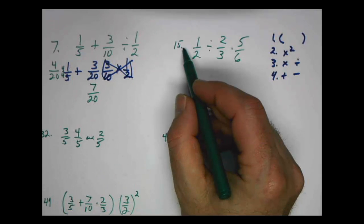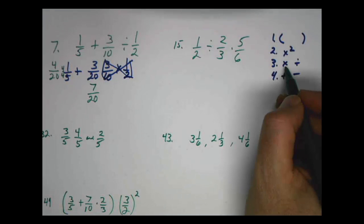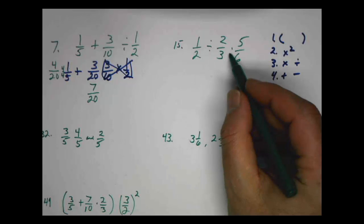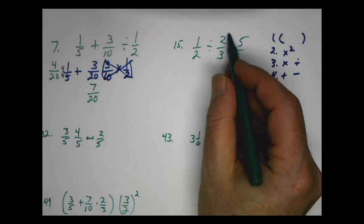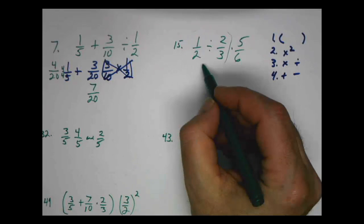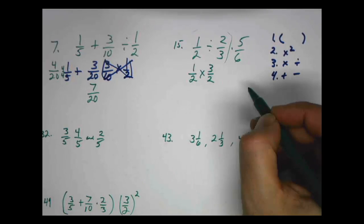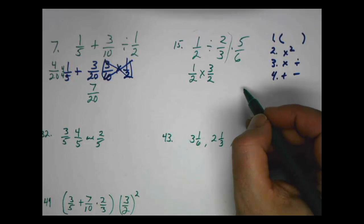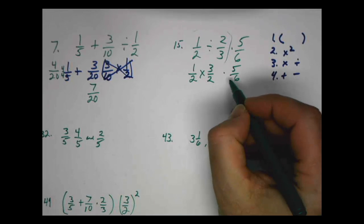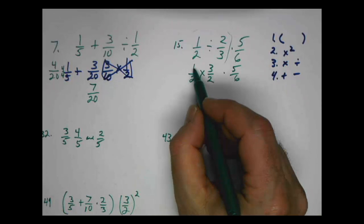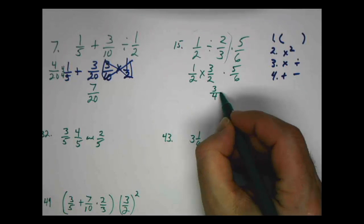Problem number fifteen. I don't have any parentheses, I don't have any exponents. I do have multiplication and division, but remember we deal with them as we go left to right. So we have to deal with the division first. So we have to rewrite the problem to a multiplication problem. We didn't do anything with this, we're just going to drop it down. So we deal with this part first. 1 times 3 is 3, 2 times 2 is 4.